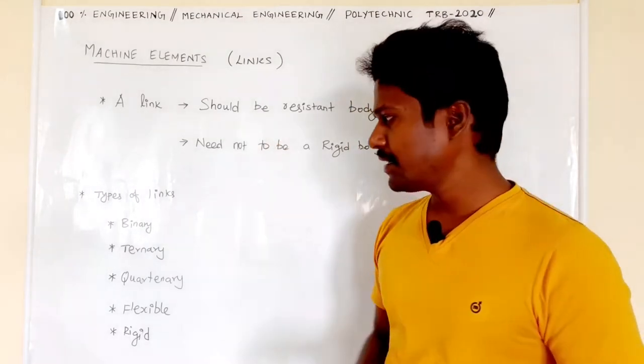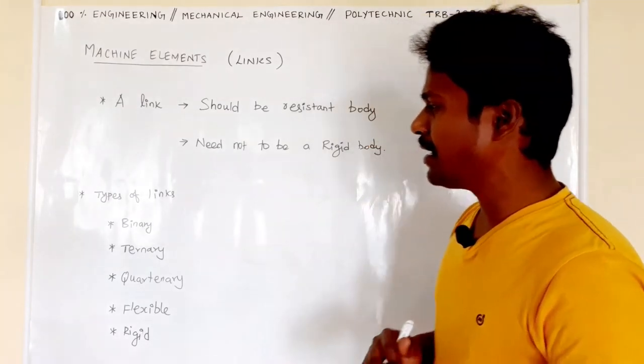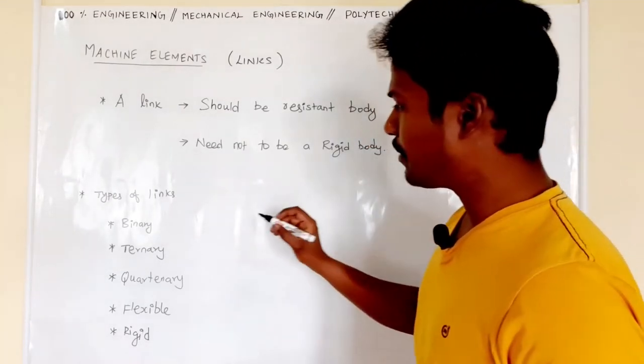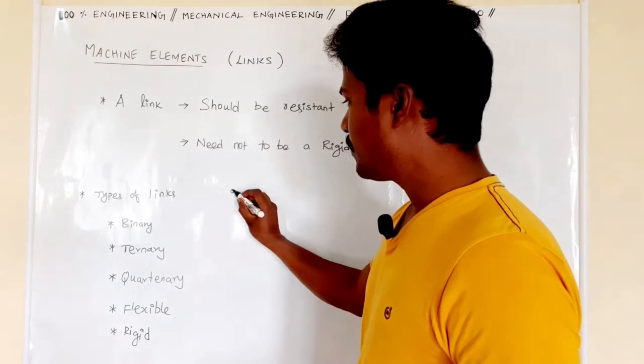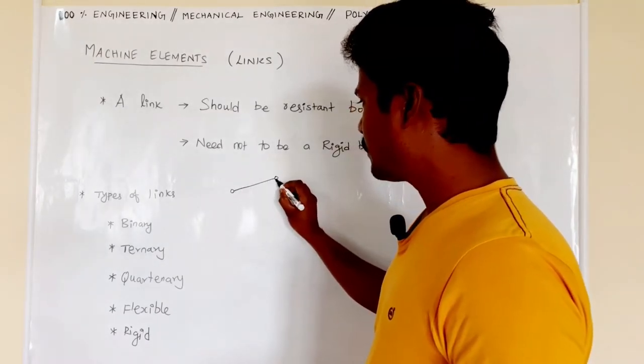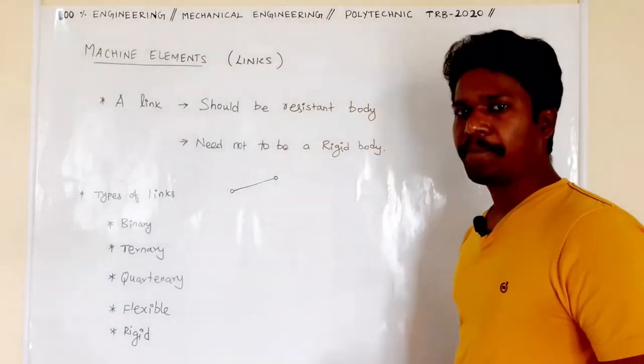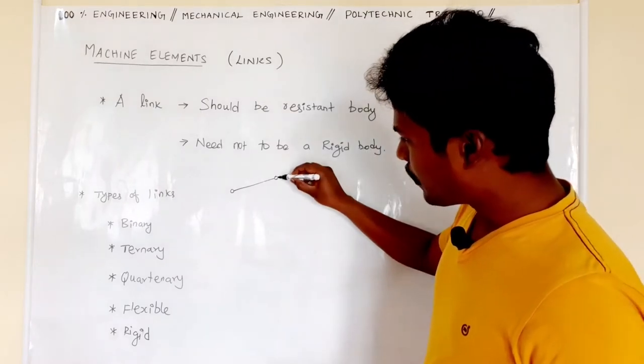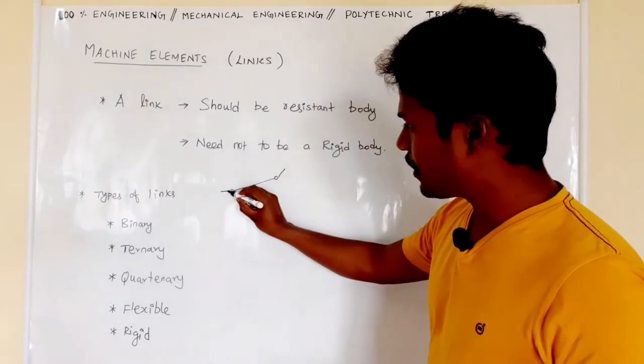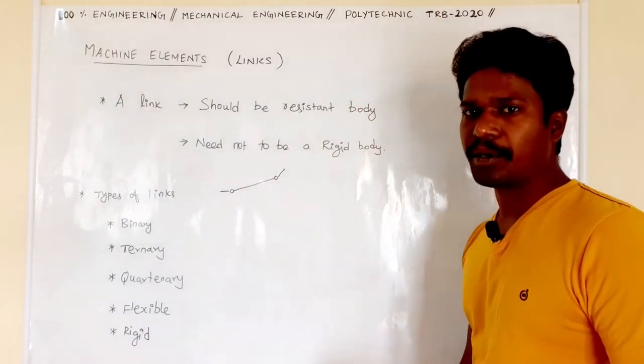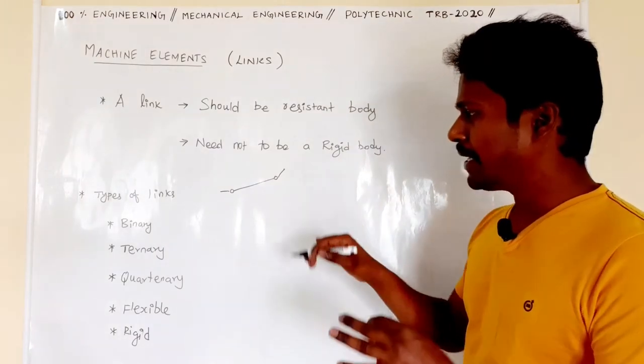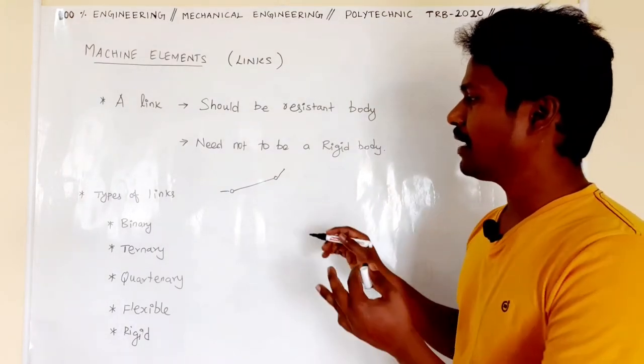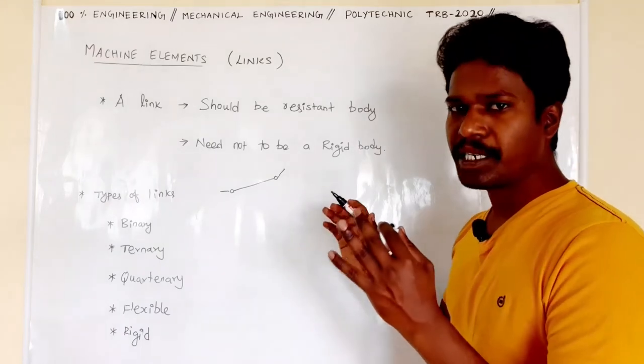Next, types of links. Binary link means there are two nodes on it. On this side, we can join another machine element. On this side, we can join another machine element. So on one binary link, we can add two machine elements.